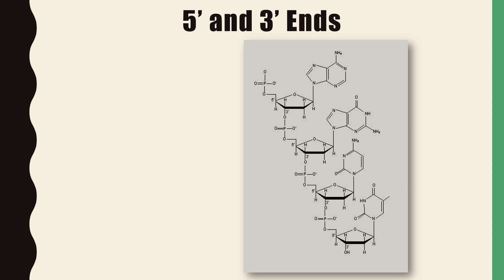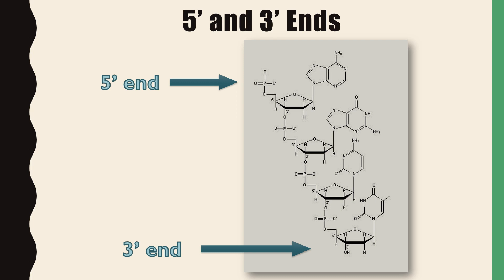Each strand of DNA or RNA has a 5' end and a 3' end. The 5' end is always the end with a free phosphate group — you can see the phosphate group on that end is not attached to another nucleotide. On the 3' end there is a free sugar that is not attached to another nucleotide. Always remember: the 5' end has the free phosphate and the 3' end has the free sugar.